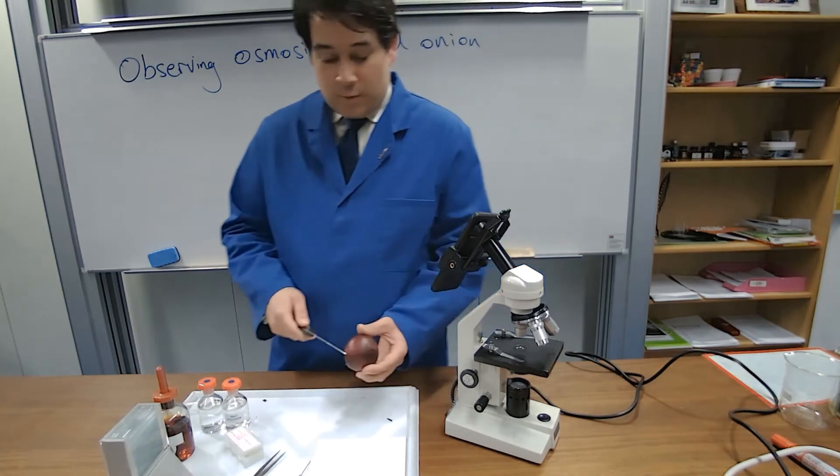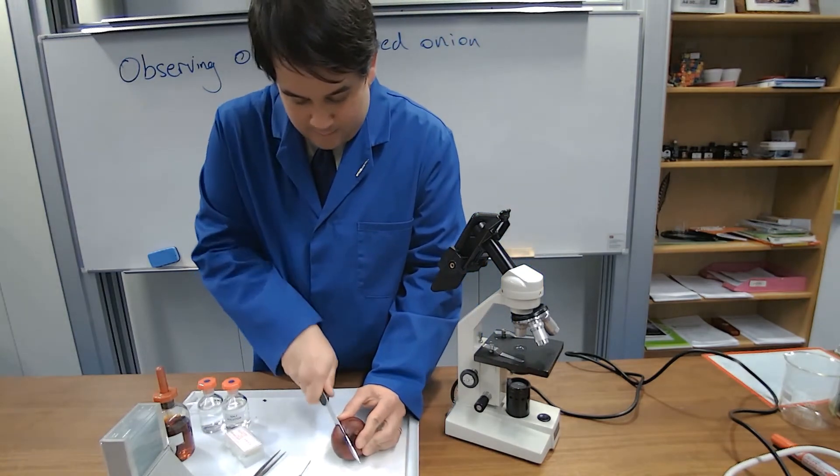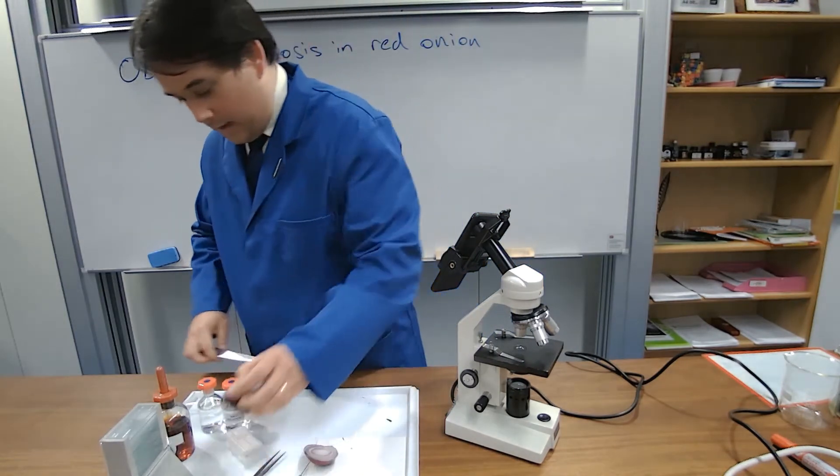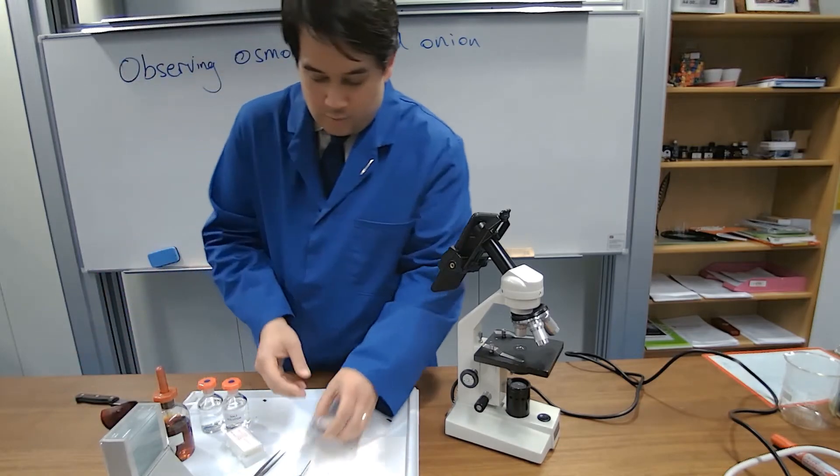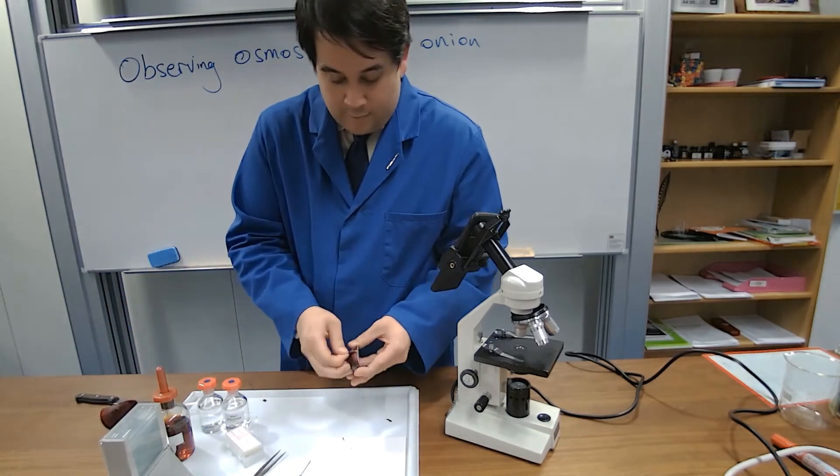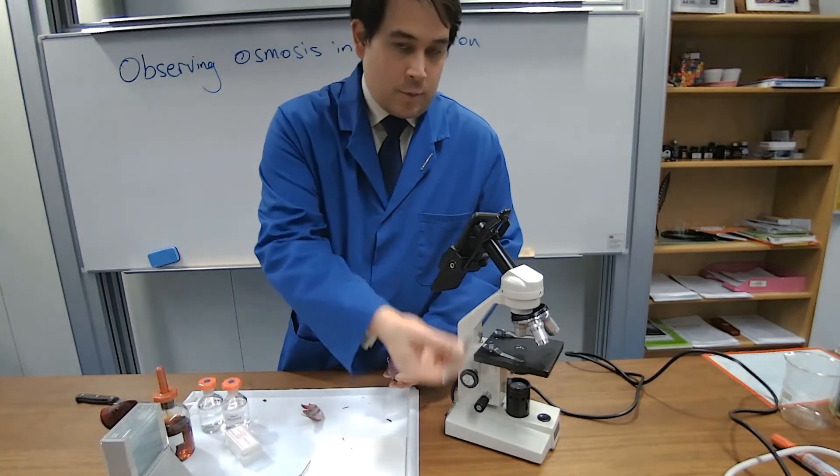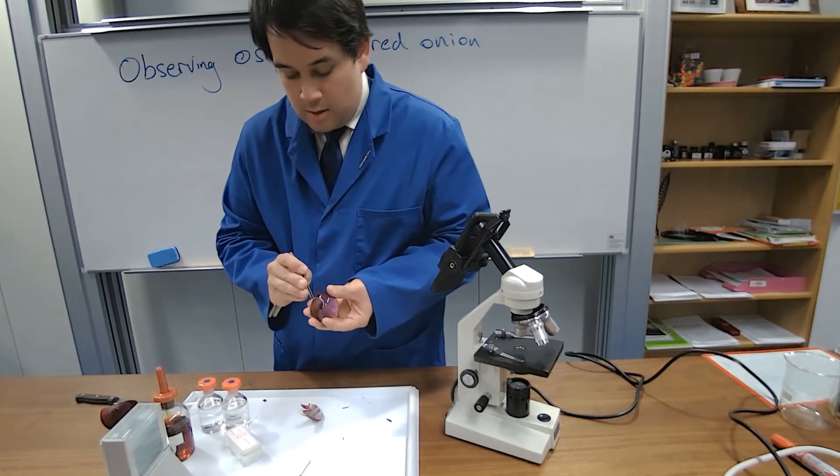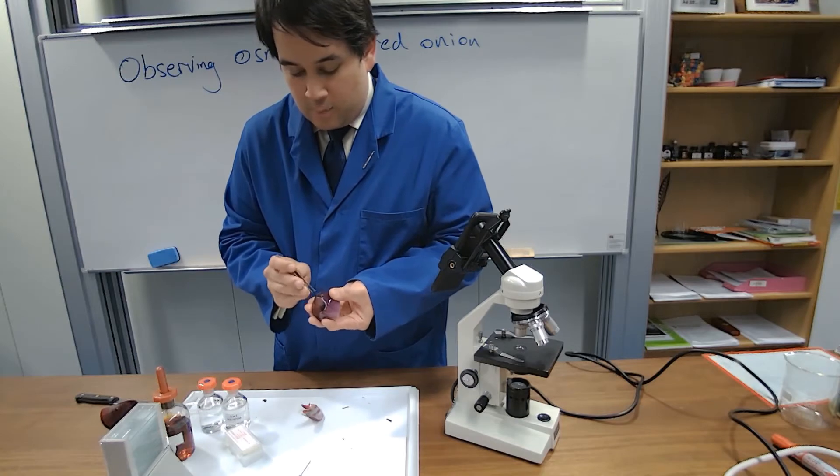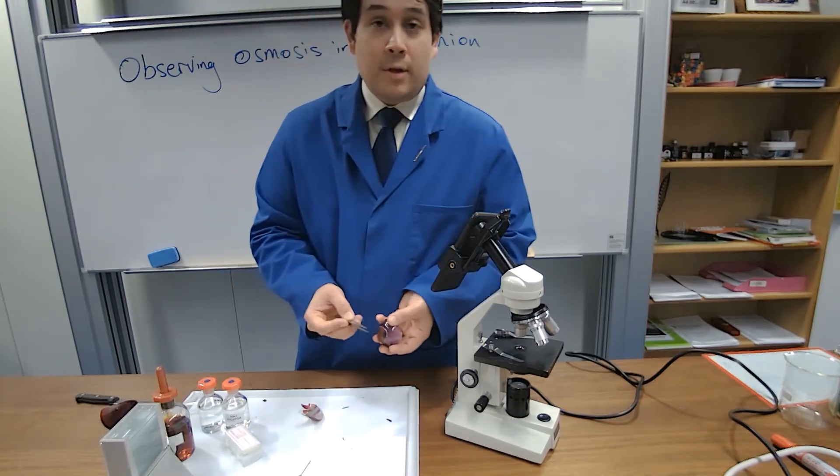First, we're going to be cutting out a specimen of red onion in the same way that we did before. I'm going to take a very thin slice of red onion, thin because we're using a light microscope, and from there we're going to be adding two different types of solutions to it.